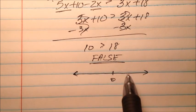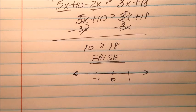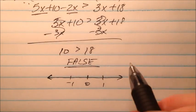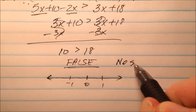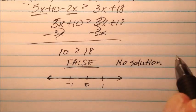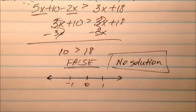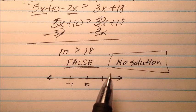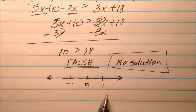So I'll put a 0, maybe a 1, and a negative 1. If it's a false statement, if you recall, it's no solution. So what it means is that there is no value that will make this inequality true. So if that's the case, what can I shade?